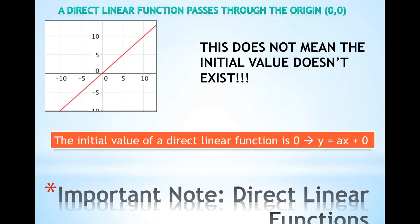So if you were to say there's no initial value, you're wrong. There is an initial value — it's zero. The initial value of a direct linear function will always be zero because it passes through the origin. A general rule for a direct linear function would be y = ax, where a is your slope, plus zero because zero is where it crosses the y-axis.